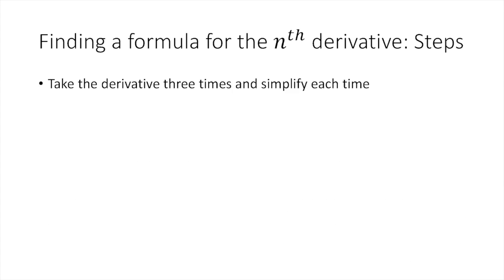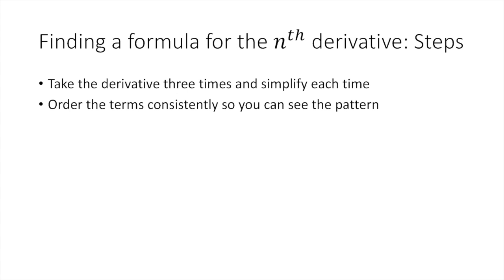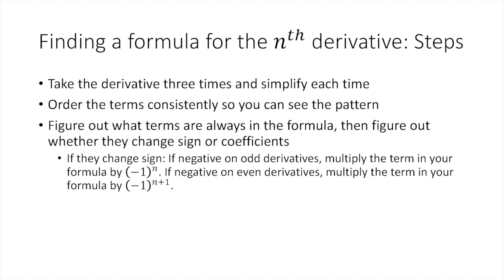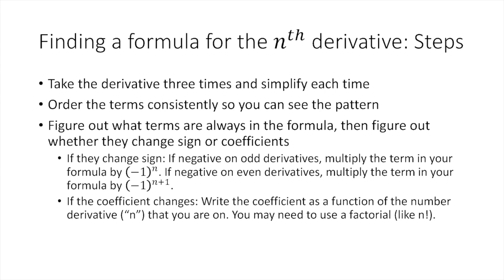Now let's discuss the steps you can use every time. First, take the derivative three times and simplify each time. Then, order the terms consistently so you can see the pattern. Figure out what terms are always in the formula, and then figure out whether they change sign or coefficients. If a term changes sign and it's negative on the odd derivatives, multiply it by negative 1 to the n. If it's negative on the even derivatives, multiply it by negative 1 to the n plus 1. Also look at whether the coefficient in front of that term changes — write the coefficient as a function of n. We may have to use a factorial, like n factorial, and we'll look at an example of this.